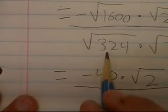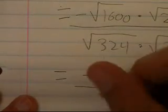over the square root of 324, which is, of course, 18. If you don't know that, it's a bit of trouble, times radical 2.